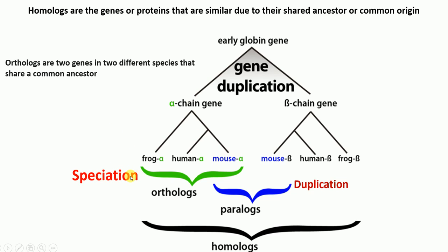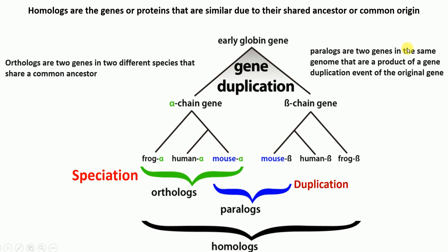Whereas paralogs — what are paralogs? Paralogs are two genes or proteins in the same genome that are a product of a gene duplication event of the original gene. For example, mouse alpha gene and mouse beta gene have a common ancestor, but the gene duplication event produces two genes from the original gene. So mouse alpha and mouse beta are paralogs.